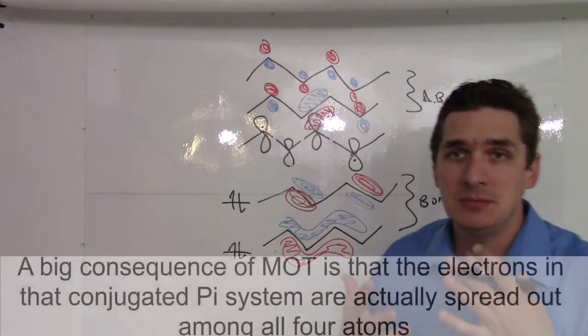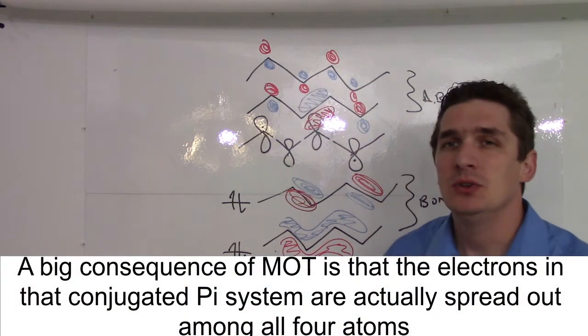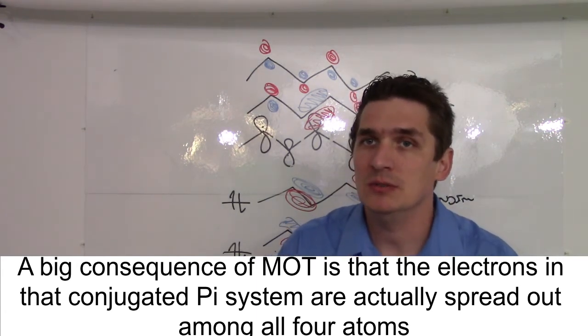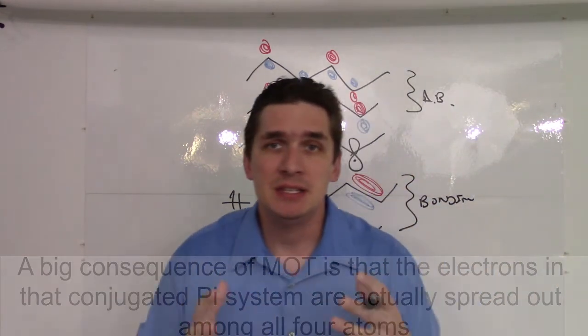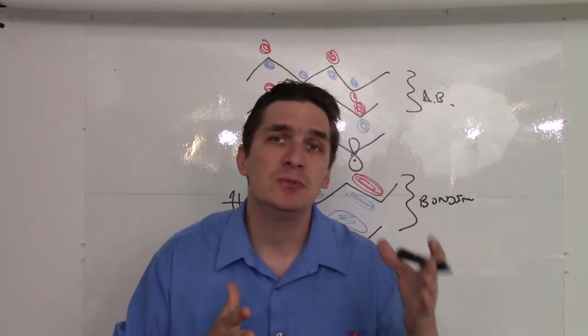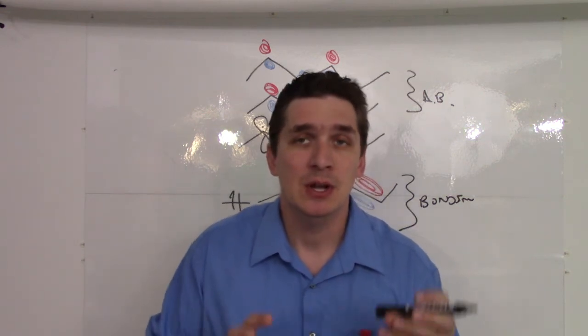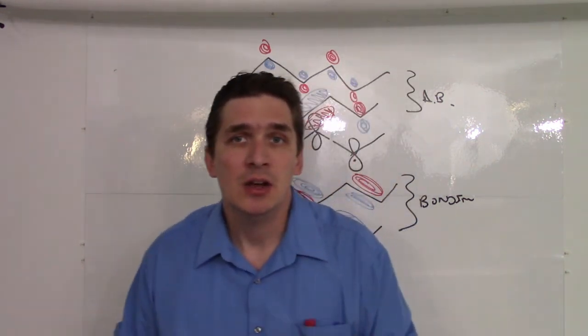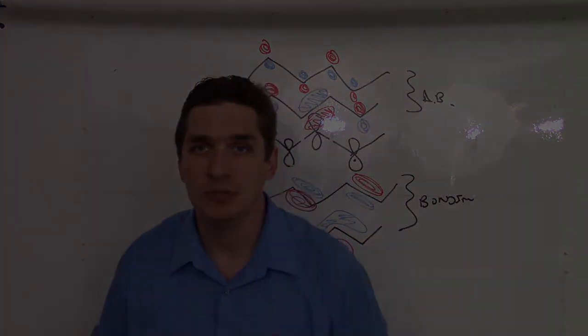But there's an important implication in this, that we're no longer, particularly with the lowest energy orbital, constraining these electrons to be between two individual atoms. They're actually spending a lot of time spread out among the four atoms. And this is going to give rise to electron mobility. The electrons can actually move from carbon to carbon to carbon along the molecular orbitals that are generated. So we're getting closer and closer now to understanding how aromaticity falls out from molecular orbital theory and how we're going to retroactively apply it back to Lewis theory.